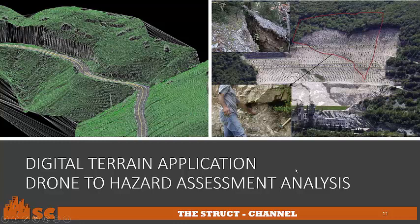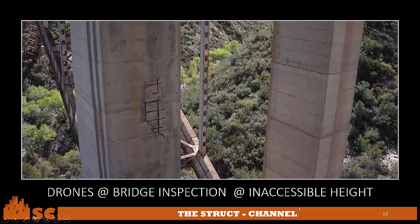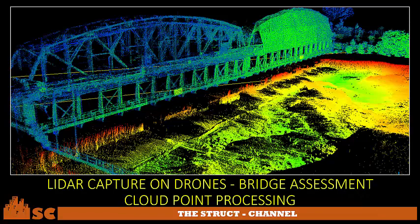Drones are used for bridge inspection at inaccessible heights. With this kind of picture, you can utilize your drone by flying it near the elements and seeing if there are problems on those objects. Having a lidar on the drone, you can capture an area of the bridge obliquely, and while processing that using cloud point processing, you can produce this image and then have it in a 2D drawing.